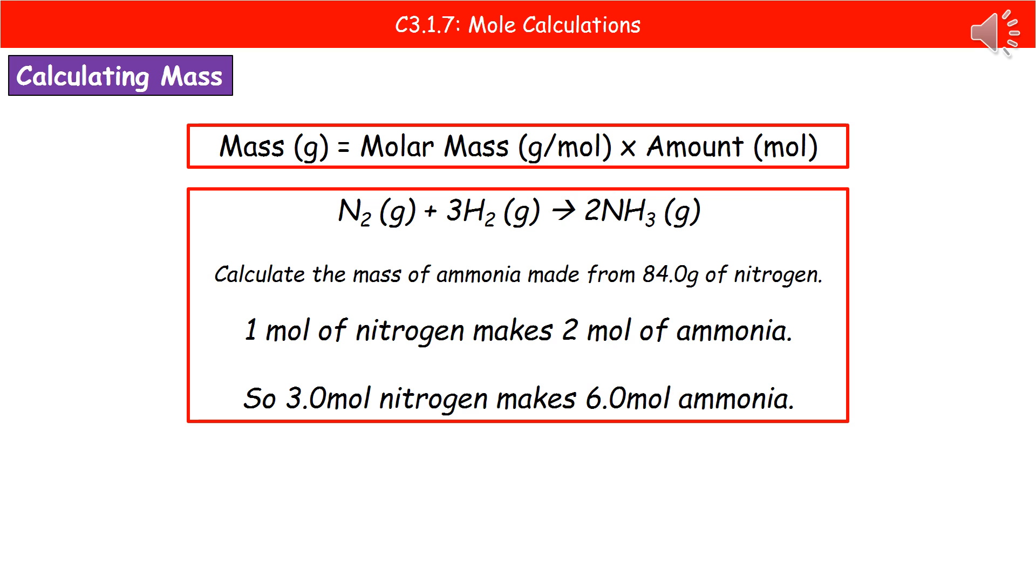We know that in our question here, we have 3 moles of nitrogen. So if we're starting off with 3, then 3 times 2 gives us 6 moles of ammonia being made. You just need to apply that same ratio from the balanced equation to work out the number of moles of your unknown.